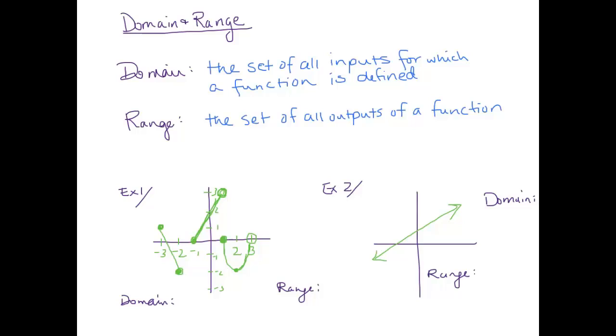And then for range, a lot of people have said that's the y values. I'm just going to say that the range is the set of all outputs of a function. But when you're looking on a graph, it does make sense to think of domain as the x values that are part of the graph and the range as the y values.